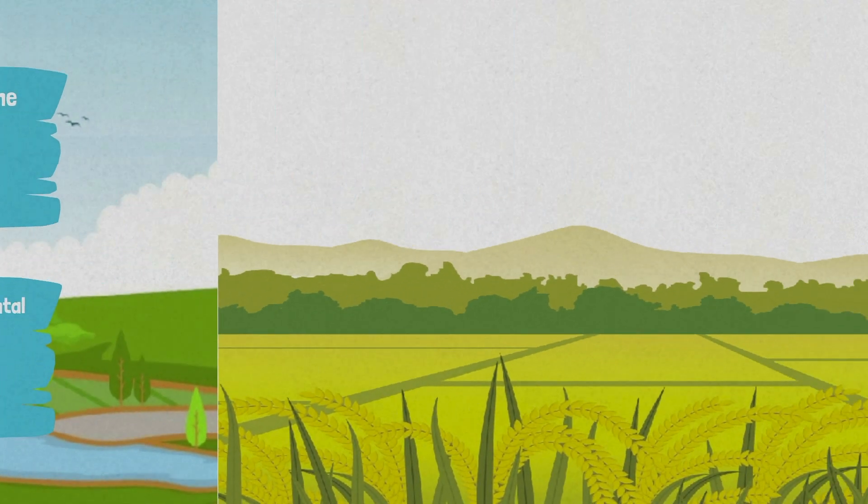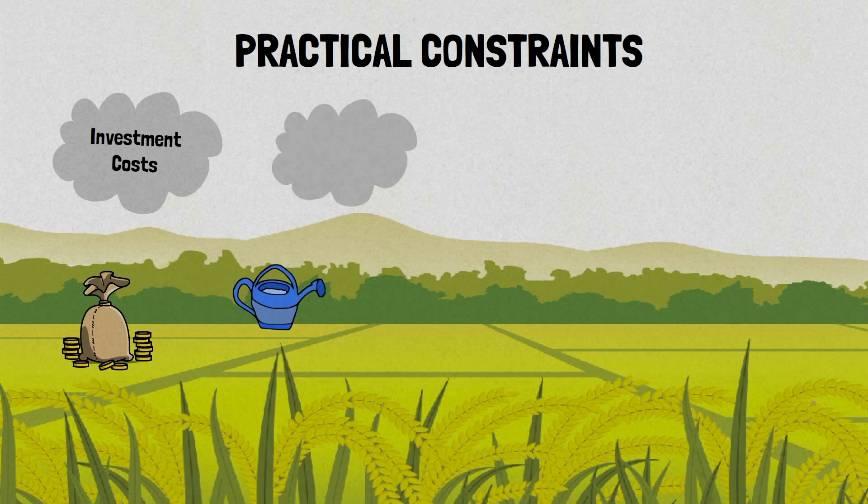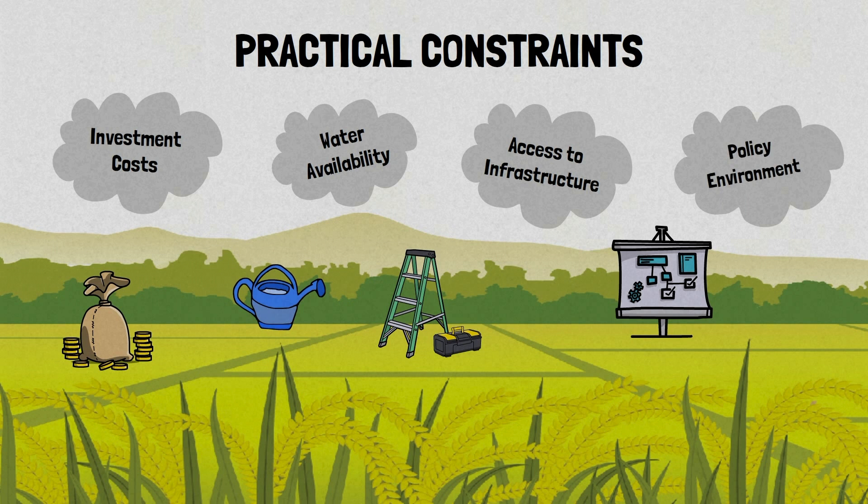However, in many areas, there are practical constraints in implementation, including initial investment costs, the requirement for year-round water availability, access to infrastructure, and the presence of an enabling policy landscape which supports land use change.